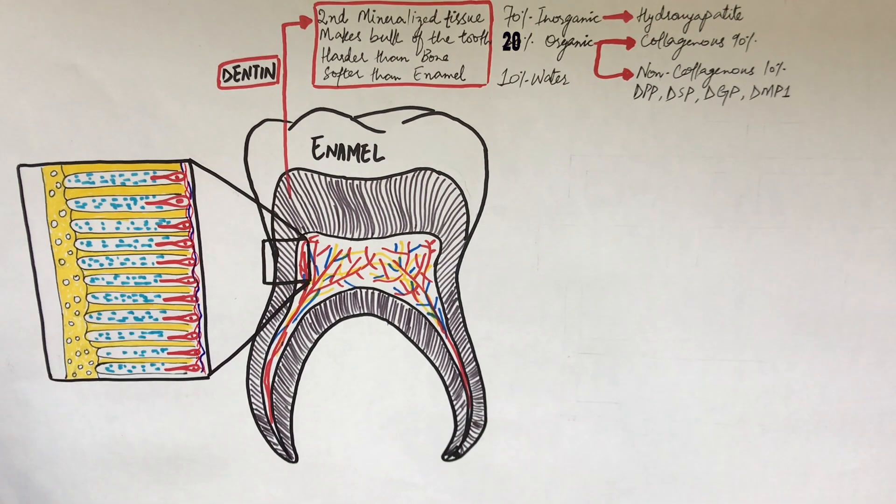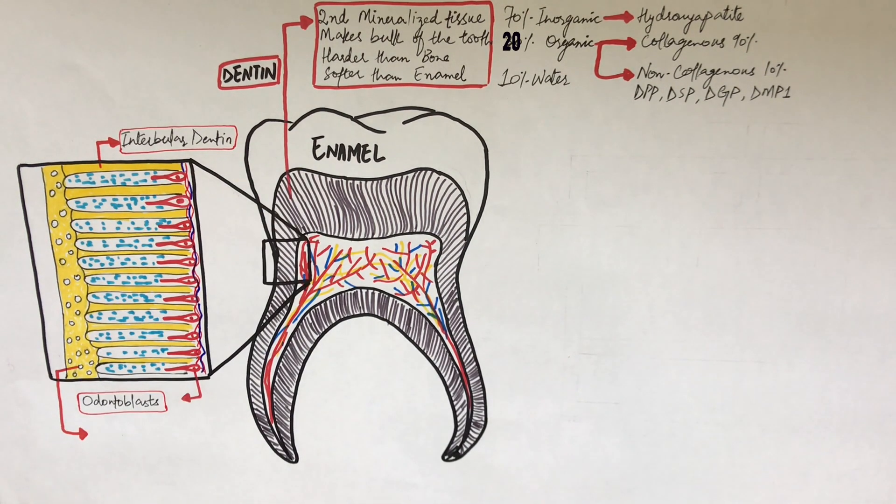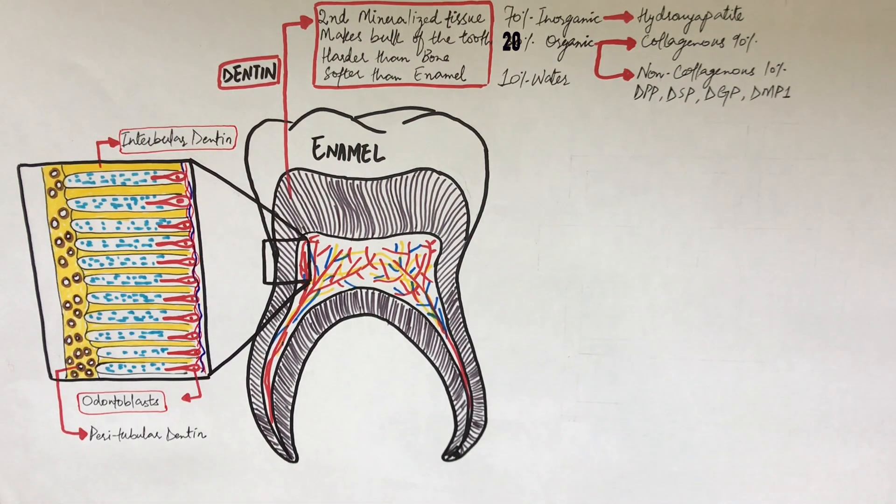The part of the dentine lying between the tubules is called intertubular dentine, while the part surrounding each tubule is called peritubular dentine.